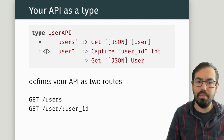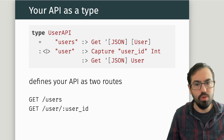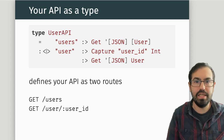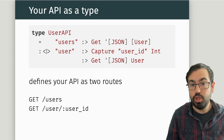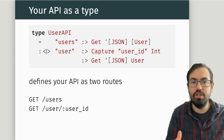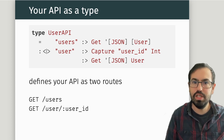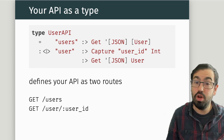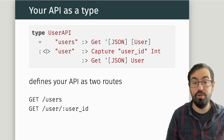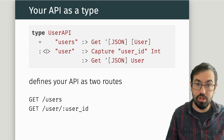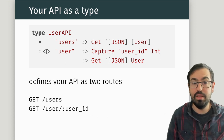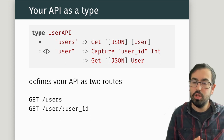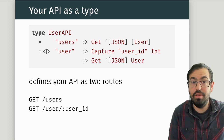Imagine you want to define an API with two routes: users, and then user with a user ID, both using the HTTP verb GET. What you write as your API definition uses combinators like colon-greater-than, GET, and capture to define parts of your URL, the method, and the return type. This type is used throughout the library to talk about your routes.